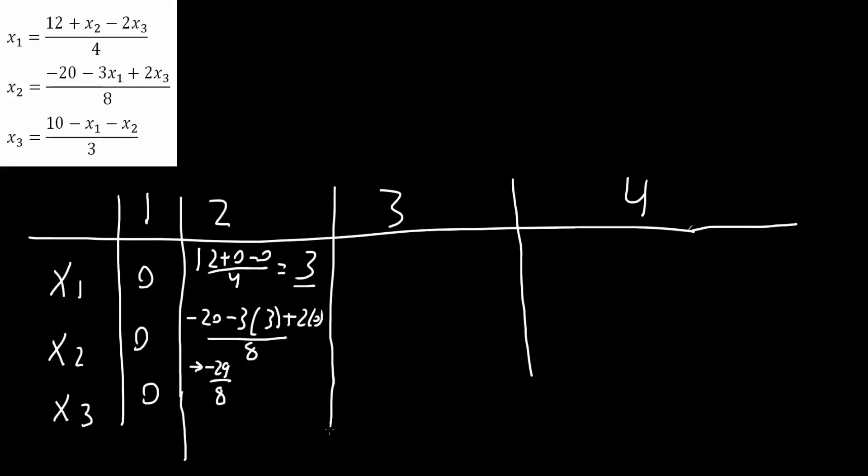And now we will do the third one. So with the third one, x1 is 3 and x2 is now negative 29 over 8. You ignore the 0's. And so we would get 10 minus 3 minus parentheses minus 29 over 8 divided by 3. And this would give us 85 over 24. And so this is one iteration.